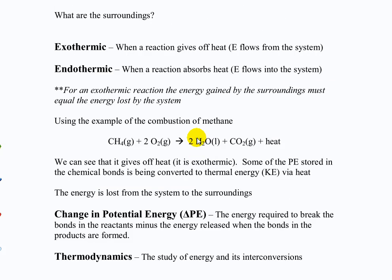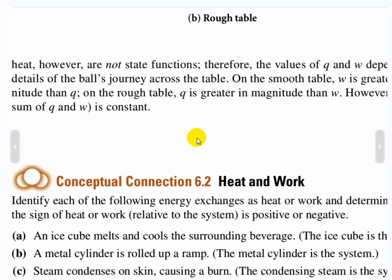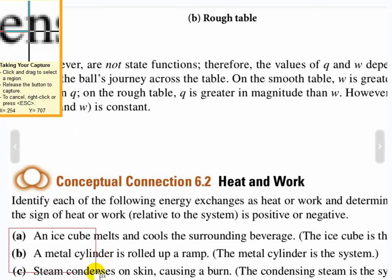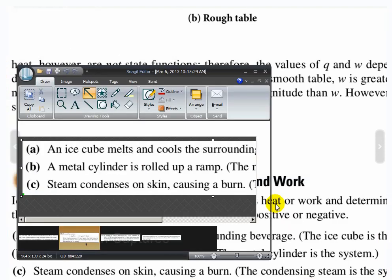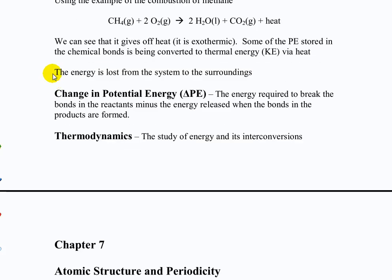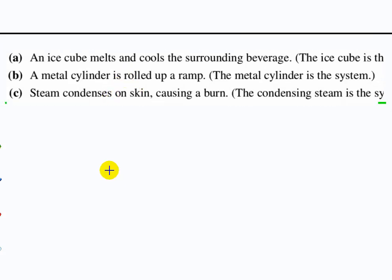Let me show you an example here. All right. In each case, I want you to say whether or not this is an exothermic process or an endothermic process and why. And this is cut off, but in each of these it says what is the system. So first, an ice cube melts and cools the surrounding beverage. The ice cube is the system. So what's happening to the system?